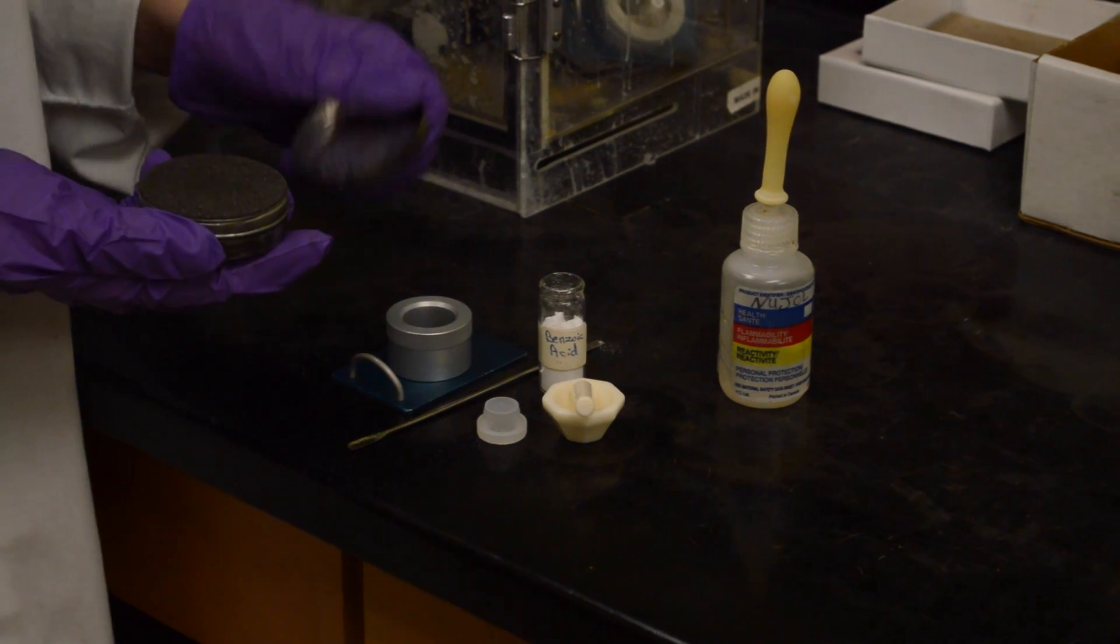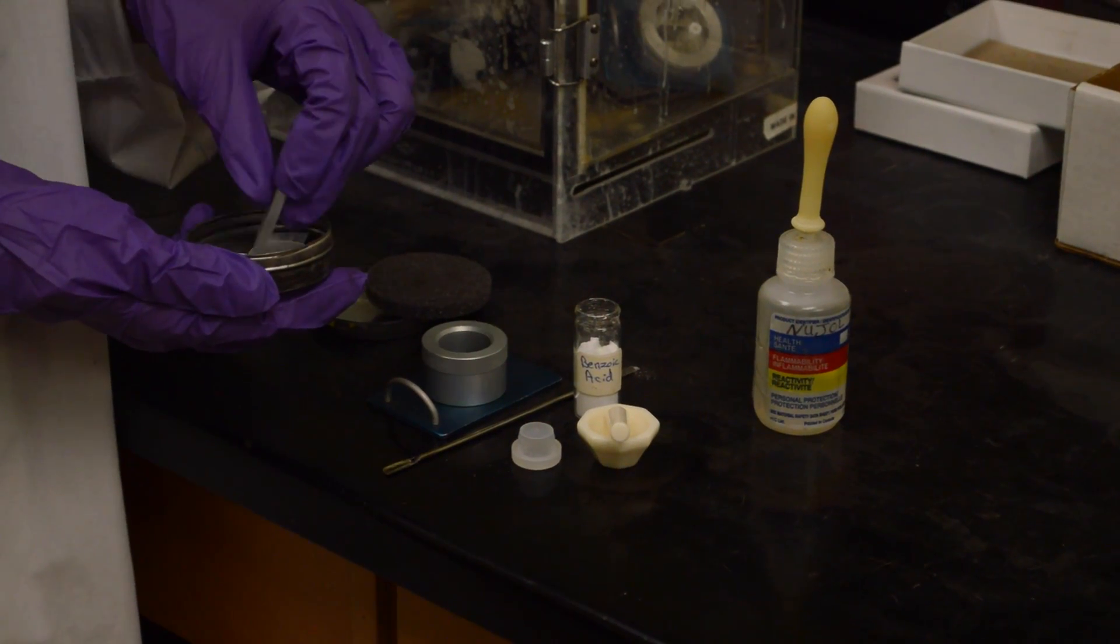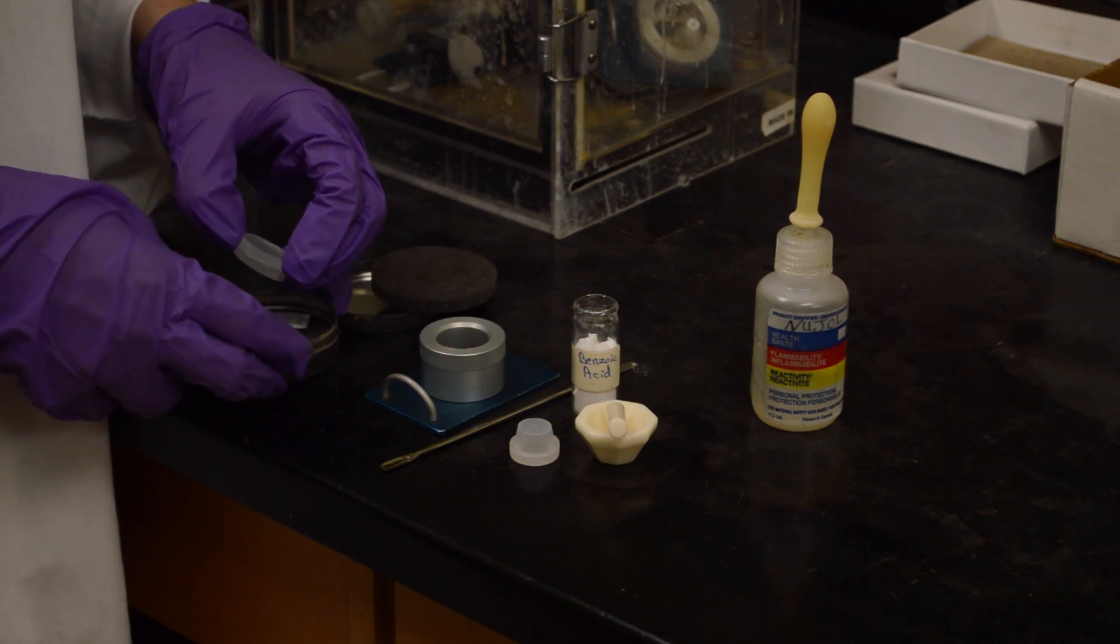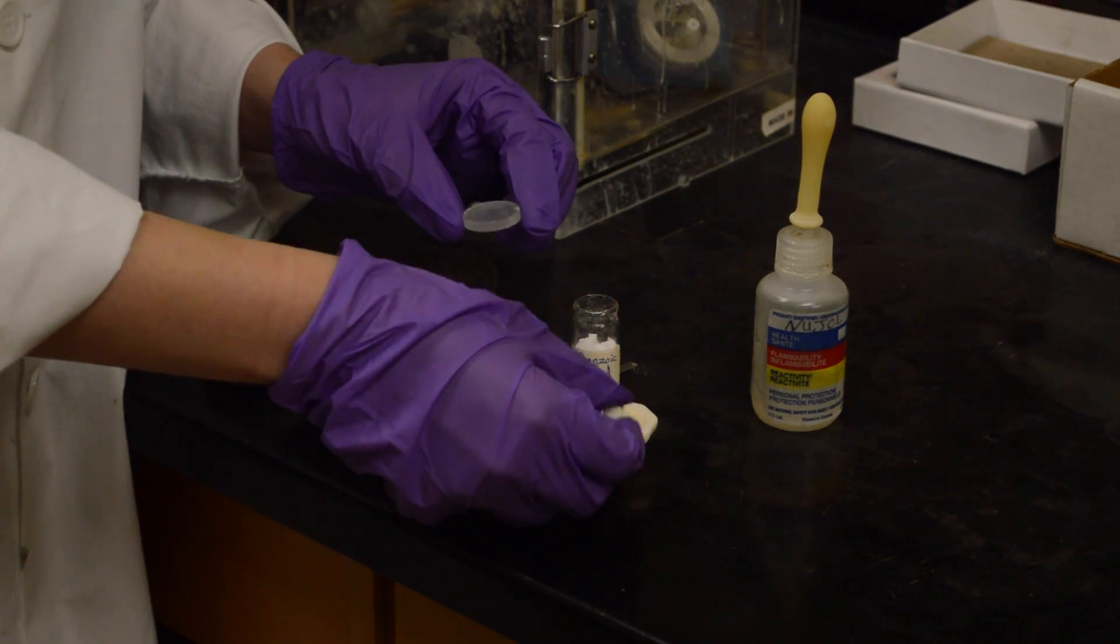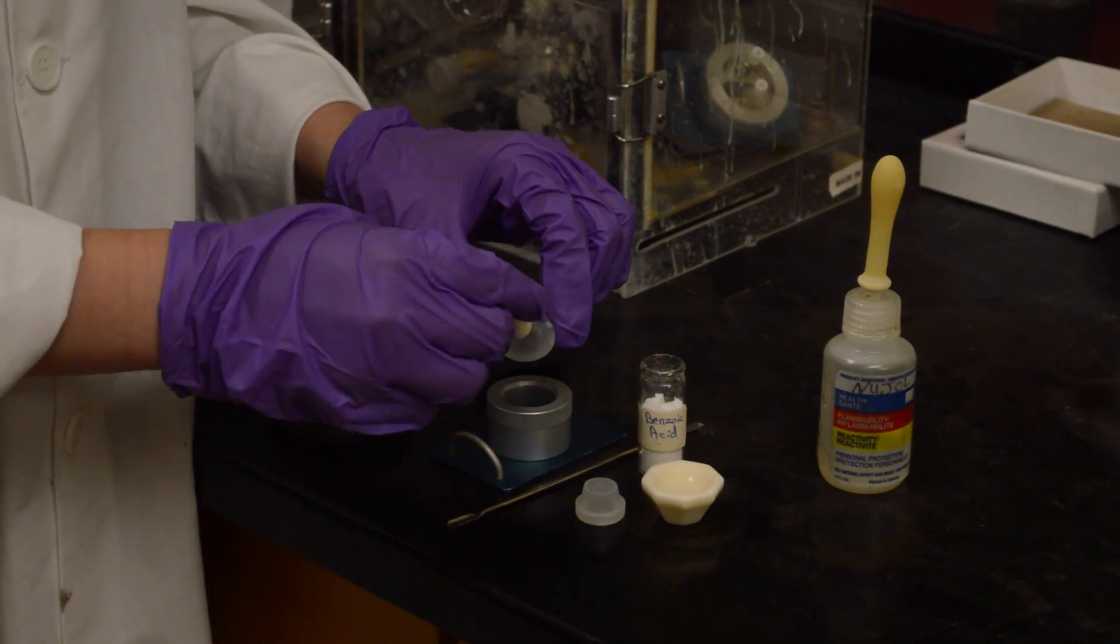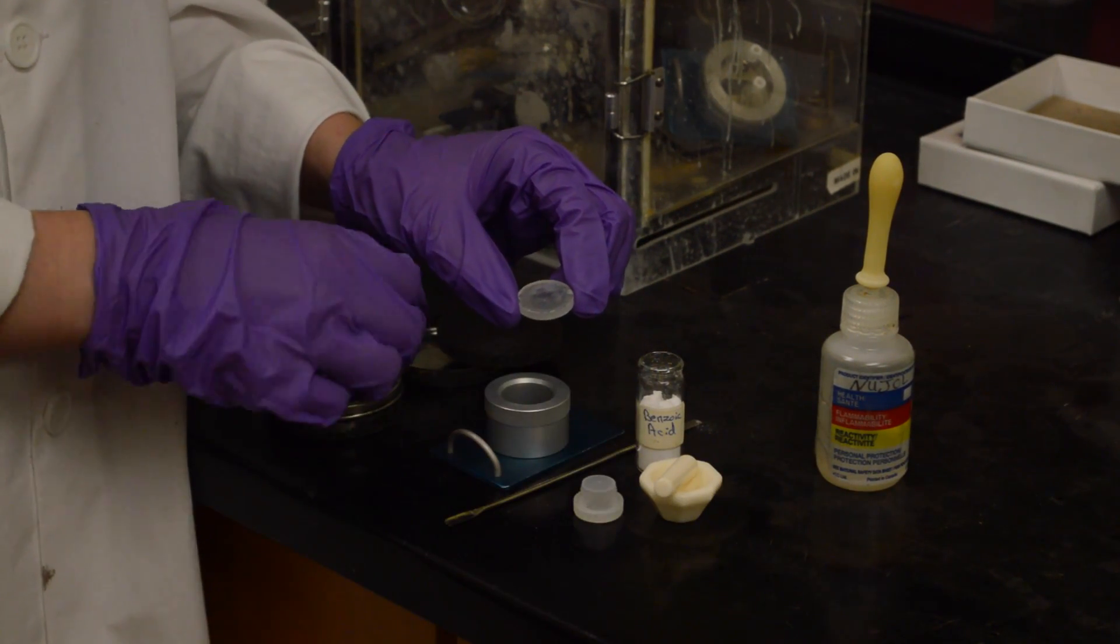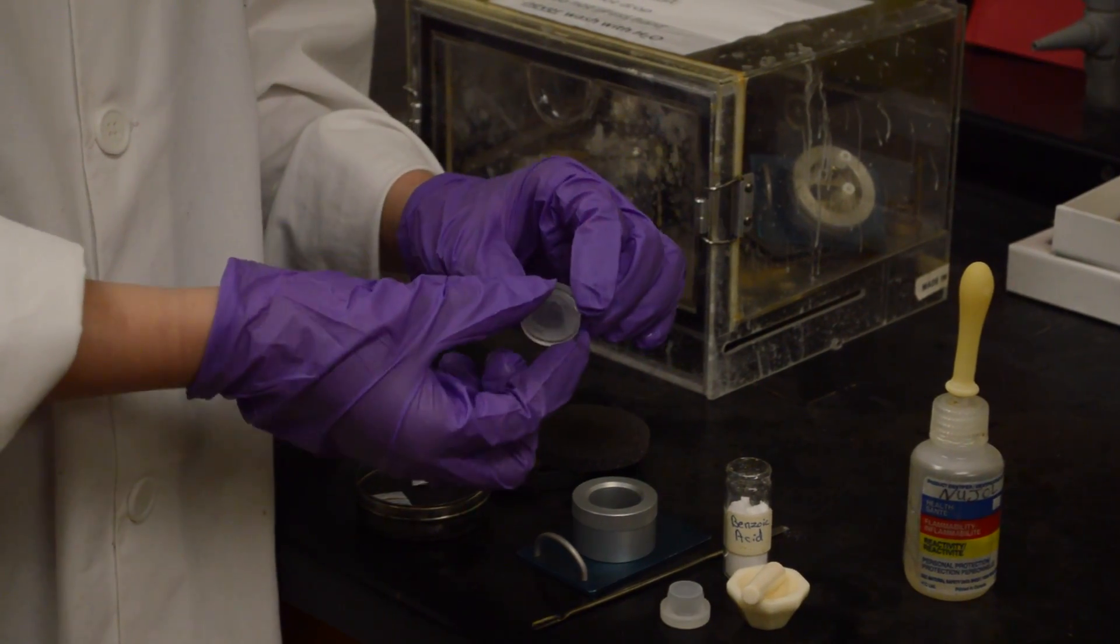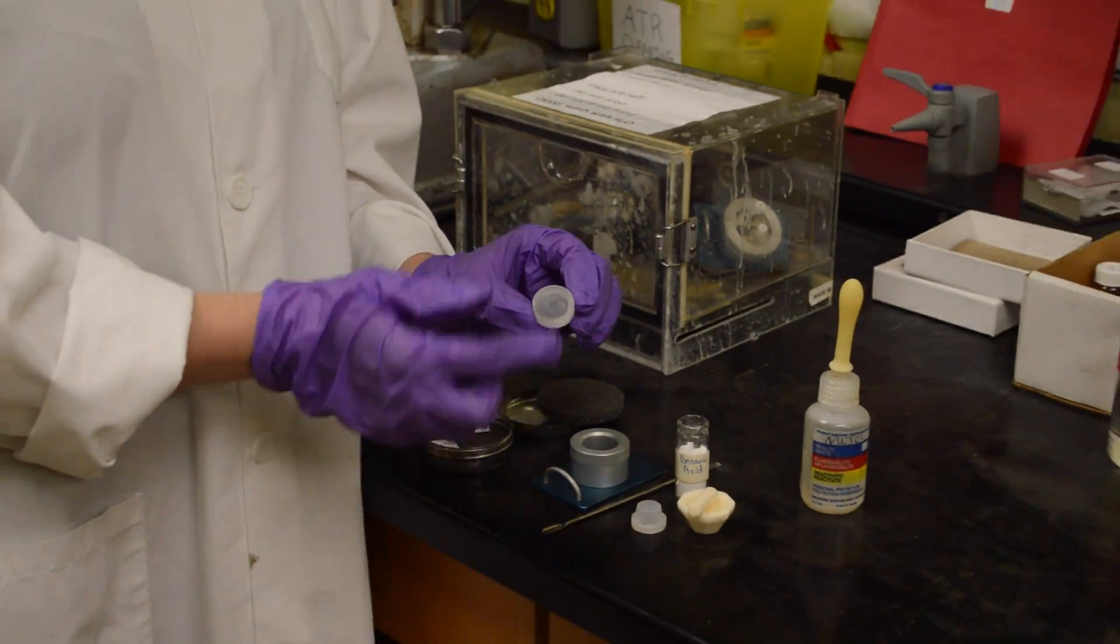Then you take the salt plates. Never put them in water. Never put them in water. You want to spread a small amount, a couple of dots on the plate like so. Then you take the second plate and you squish them together and turn them back and forth a couple of times in order to spread that paste throughout the plates.